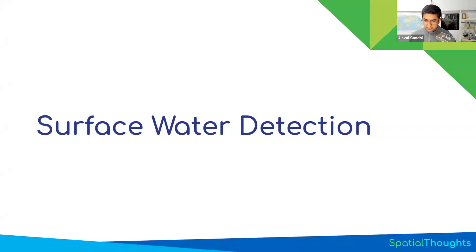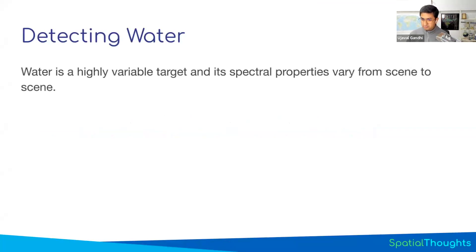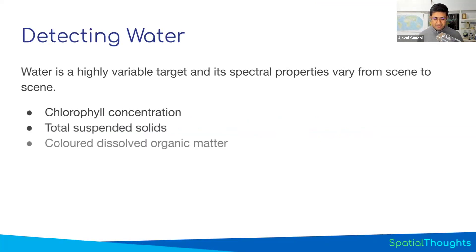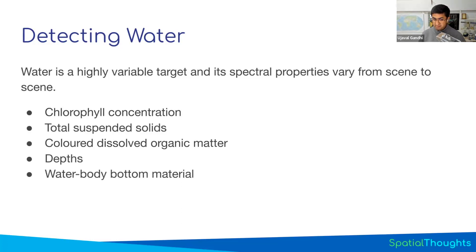Surface water detection may sound simple. You might say, we already learned how to use an index and do thresholding — what's more to learn? Detecting water globally or over time reliably is a hard problem, because water is not always pure. Water will have some sediments, it may have some algae or other organic matter, the water depth appears differently, and the reflectance will be different. Depending on the contents of the water, the reflectances would be very different. So comparing two water bodies in two different regions, the same threshold and same index may not perform well. That's why detecting water is not a straightforward, easy problem.